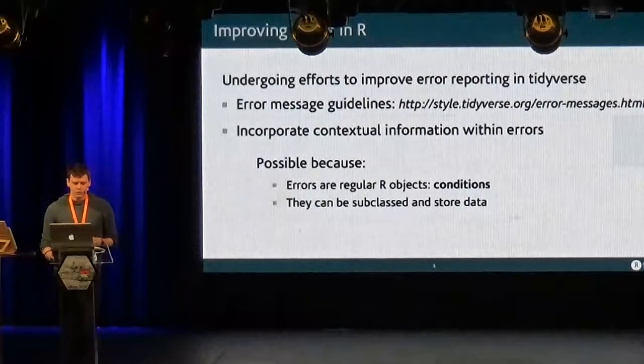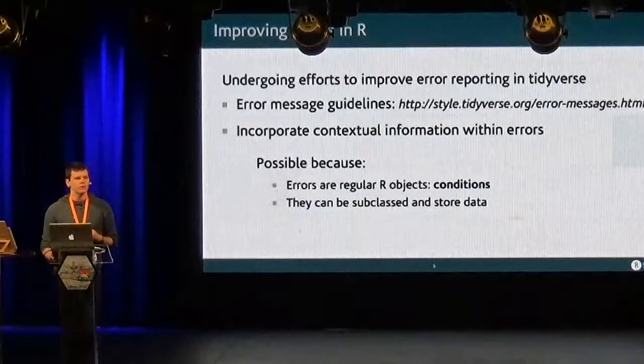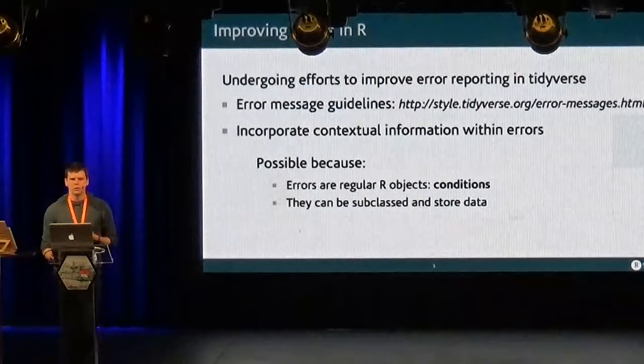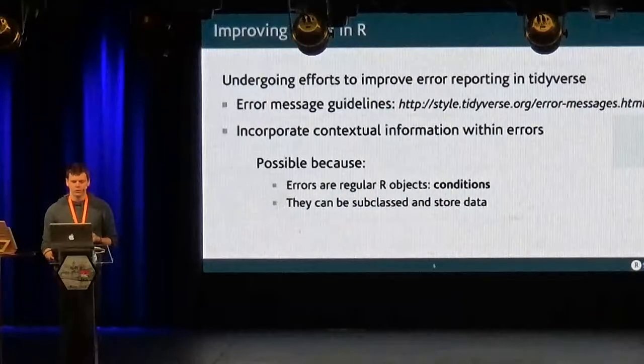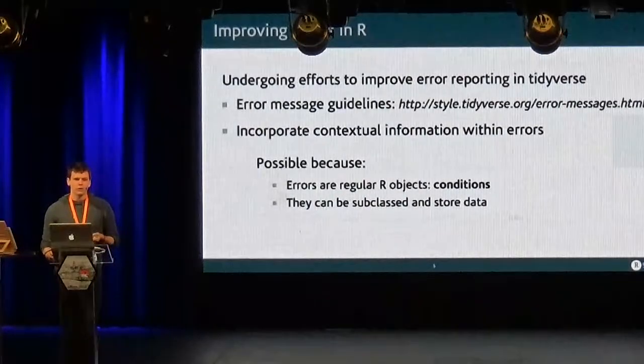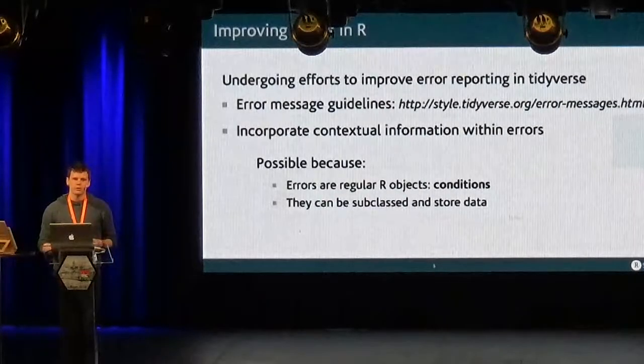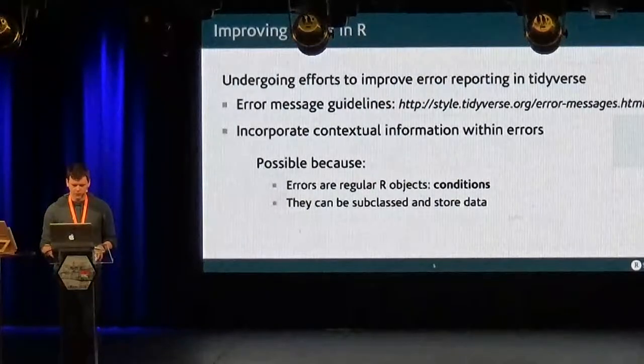We now have some guidelines to have more consistent messages, and we are trying now to incorporate contextual information within the errors to give more information when something went wrong. And the way we do that, why is it possible, is because errors are actually regular R objects, which are called conditions. And you can subclass them, and you can store data in them.